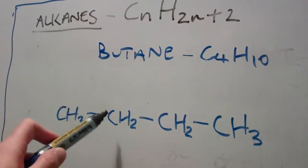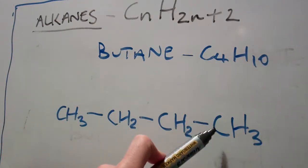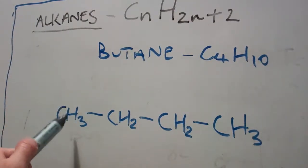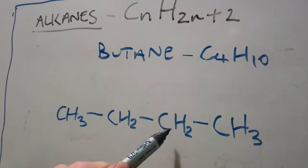If we count up our atoms, we've got one, two, three, four carbons and one, two, three, four, five, six, seven, eight, nine, ten hydrogens.